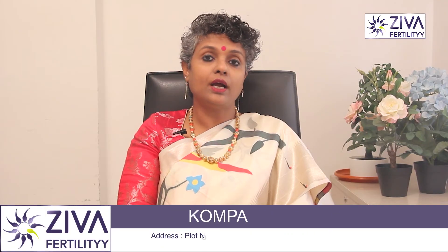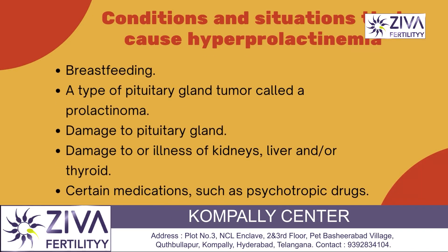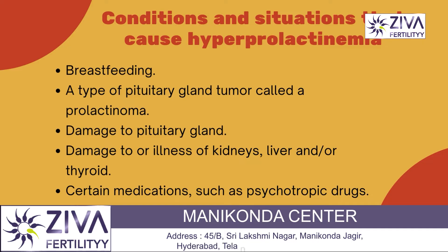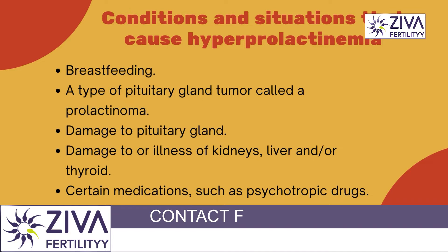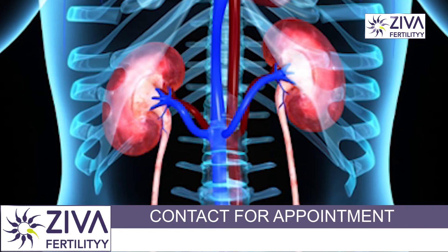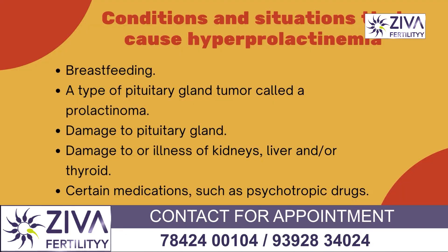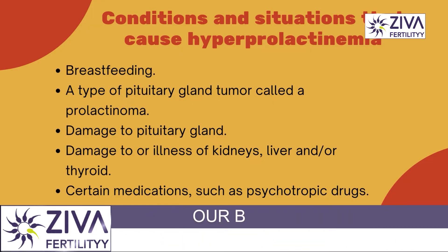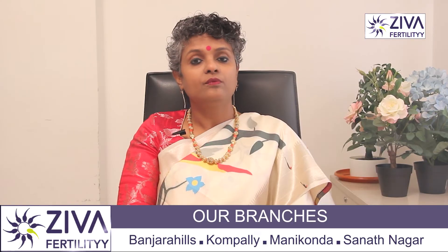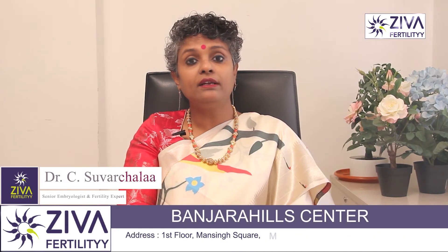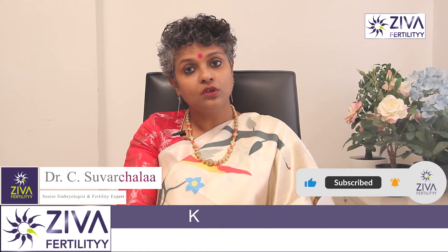There are some situations which can lead to hyperprolactinemia. They may include breastfeeding, a type of pituitary gland tumor called a prolactinoma, damage to your pituitary gland, damage or illness to your kidneys, liver, or thyroid, and certain medications such as psychotropic drugs, narcotic drugs, or drugs that treat ulcers or elevated levels of stomach acid.